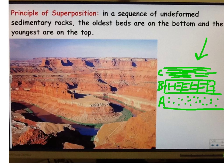If you look at this diagram, we have three different layers of rocks: A, B, and C. A is on the bottom, B is in the middle, C is on the top. According to this rule, what's on the bottom is oldest and what's on the top is youngest. So if I were to sequence these rocks, I would say A is oldest, B is next oldest, C is the youngest. Simple idea.